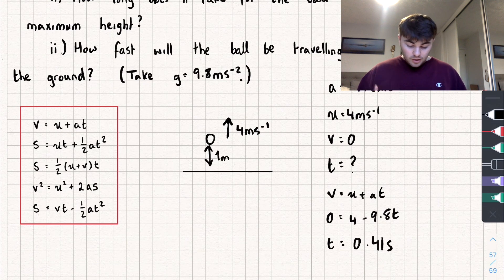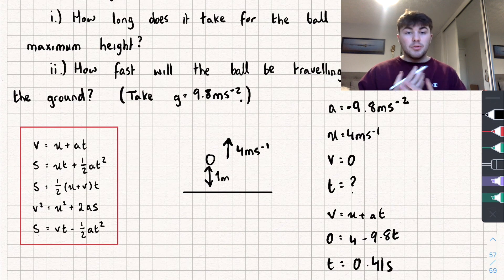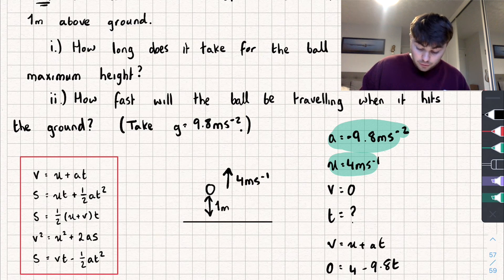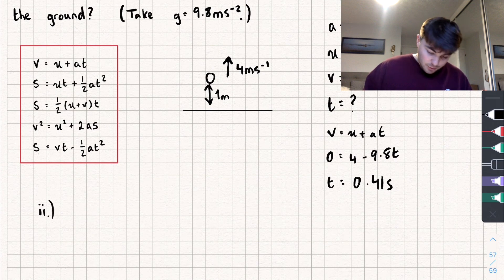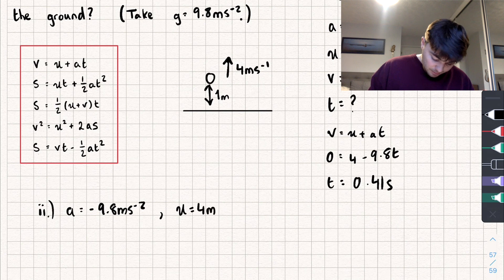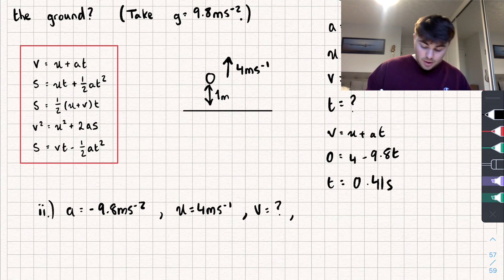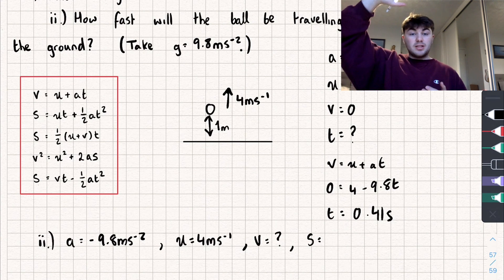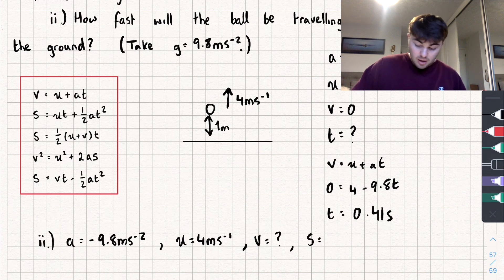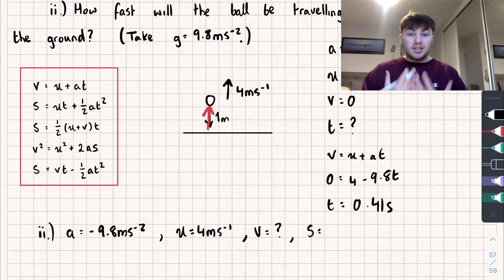Part (b) asks how fast the ball is traveling when it hits the ground. We know the initial velocity and acceleration from before. This time we want the final velocity v, and we don't know or need the time. The key thing here is displacement — remember, displacement isn't the total distance traveled. The ball starts one meter above the ground; when it lands, it has ended up one meter below its starting point, so the displacement is −1 meter.